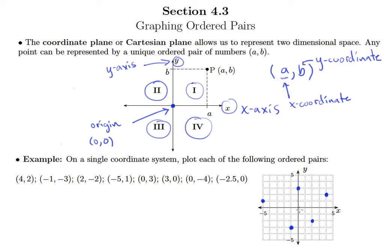Then (3, 0): that means I go 1, 2, 3 in the x and nowhere in the y — I stay right there on the x-axis. Next, (0, -4): I don't move in the x at all, but I go down 4 in the y-direction. Finally, (-2.5, 0): I go back 1, 2, and a half — negative 2.5 — and 0 in the y-direction, which puts me right there.